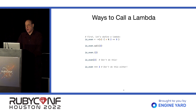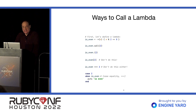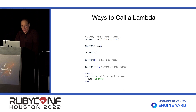The case equality operator — the triple equals — will also call a Lambda. But this too is confusing and I don't recommend it. However, in a case statement it can be handy. If you specify a Lambda in the when clause, then that Lambda will be called with the case variable as a parameter.